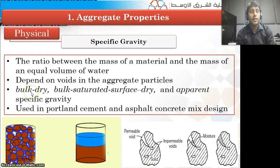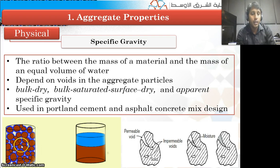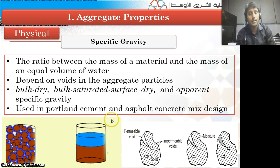We have different types of specific gravities: bulk dry specific gravity, bulk saturated surface dry specific gravity, and apparent specific gravity. Determining specific gravity is very useful and required for Portland cement and asphalt concrete mix design. If you consider the particles, there are some gaps between them called voids. The brown color is material or sand, the blue color is water, and the open one is air. A permeable void permits moisture to enter, while impermeable voids do not allow moisture or water to enter.